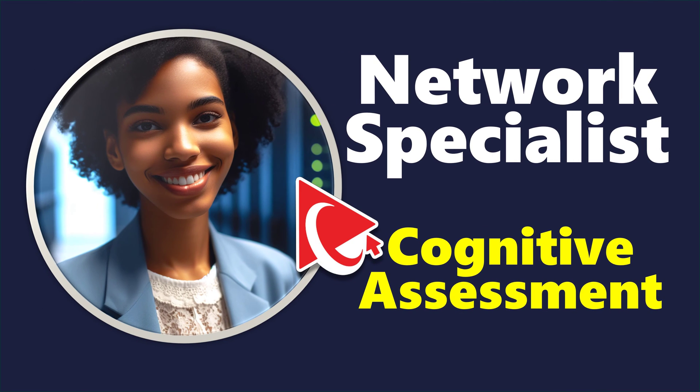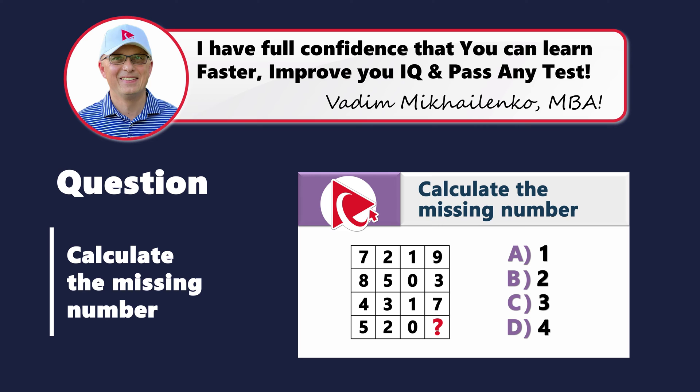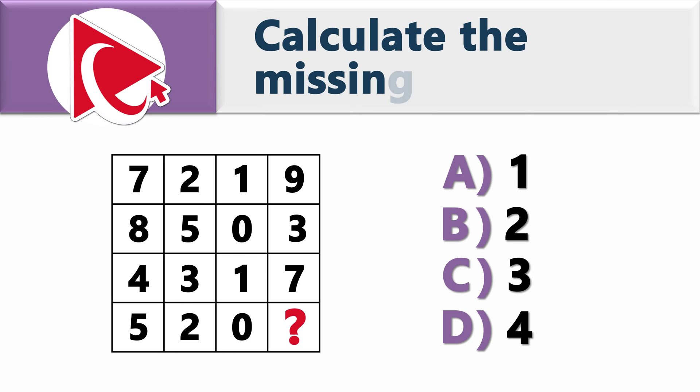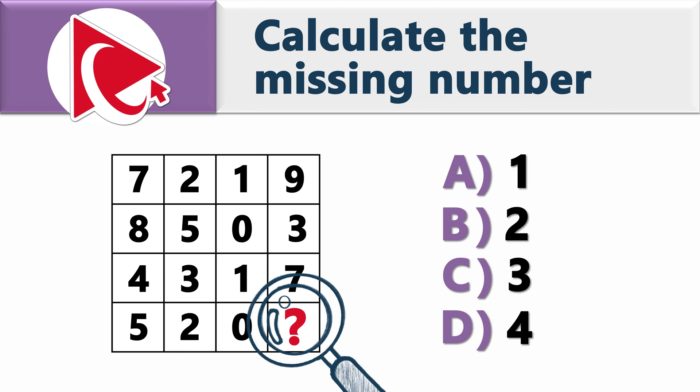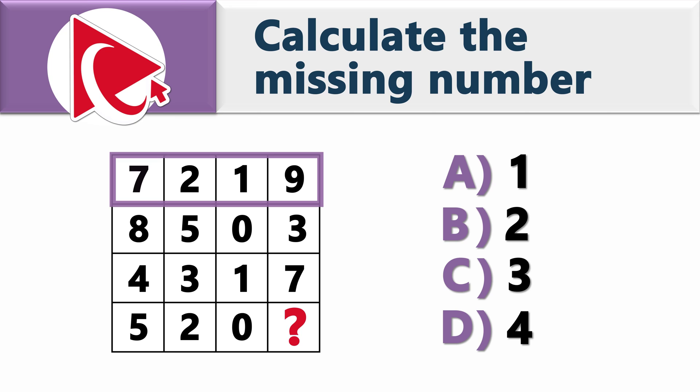It's puzzle time, and this one is more perplexing than teaching a goldfish how to play chess. You're presented with a 4x4 matrix. One of the values in the matrix is missing. The values that are there, starting with row 1, are 7, 2, 1, and 9.